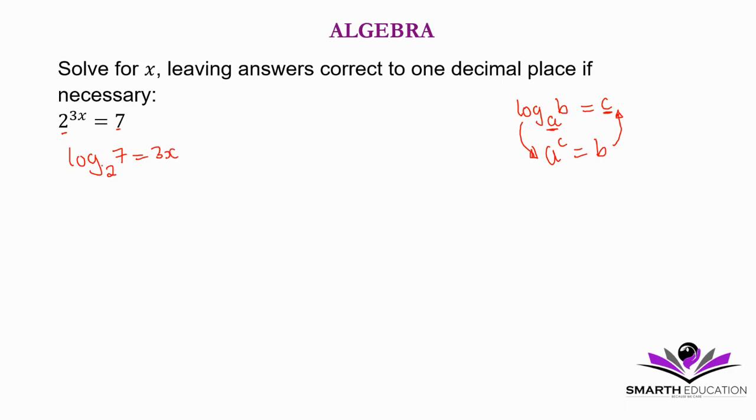Then we can put this in the calculator. 3x is equal to log 7 to base 2, so x is equal to log 7 to base 2 divided by 3.